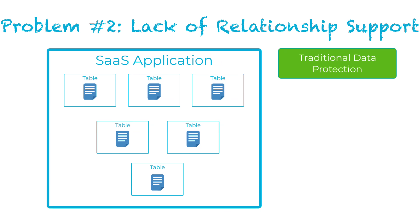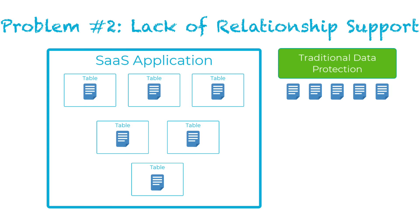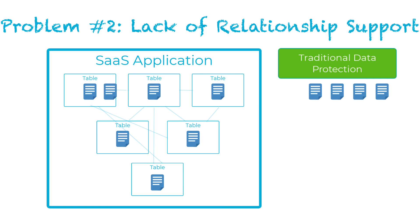Furthermore, many of them treat SaaS data the same as if it were any other data, storing backups accordingly. But SaaS data is inherently different — often heavily interconnected with weaves of relationships and lookups. Simply grabbing the data and ignoring critical relationships is a recipe for disaster. Restoring that data without relationships will leave your end users frustrated, and you're left piecing together a tangled mess on your own.